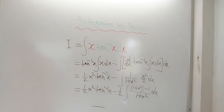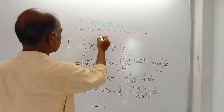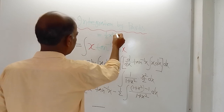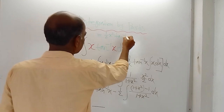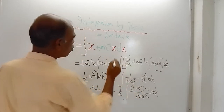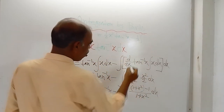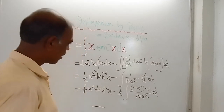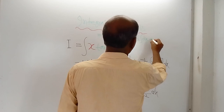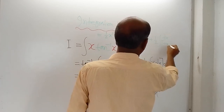Next line: the first term is half x squared tan inverse x. Then this over this is 1, so minus half integration of dx. And then this minus 1 is there, so this minus and this minus makes plus — plus half integration of dx divided by 1 plus x squared.